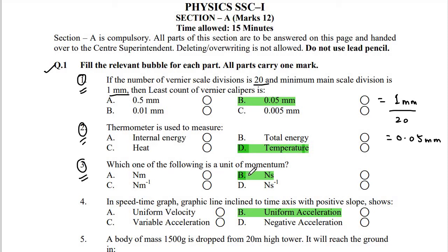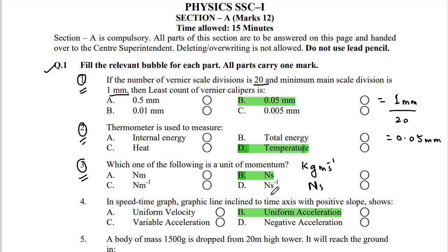Number 3: Which one of the following is a unit of momentum? When you recall, you have two units of momentum: kilogram meter per second, and Newton second. Looking at the options — Newton meter, Newton second, Newton meter inverse, Newton second inverse — Newton second is the unit of momentum, so option B is the right answer.